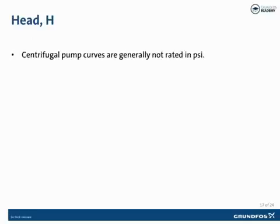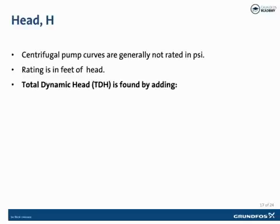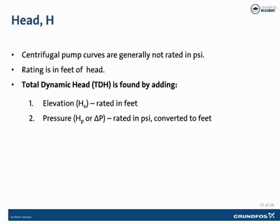Most centrifugal pumps are not rated in PSI or pressure — pumps are rated by the feet of head of the liquid being pumped. This is also known as total dynamic head, or TDH. Total dynamic head is the total equivalent height that a fluid is to be pumped, taking into account the friction losses through the pipe. Total dynamic head is determined by adding together three factors: elevation, rated in feet; pressure, normally rated in PSI which is then converted to feet; and friction loss in the pipe, also rated in feet.